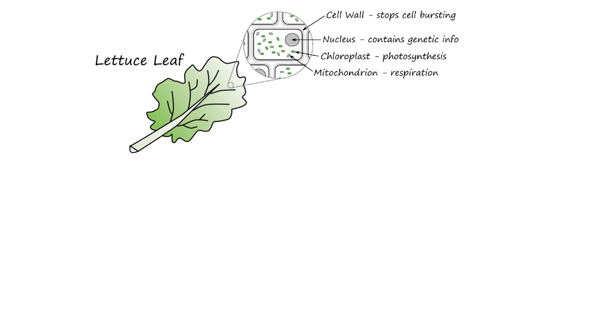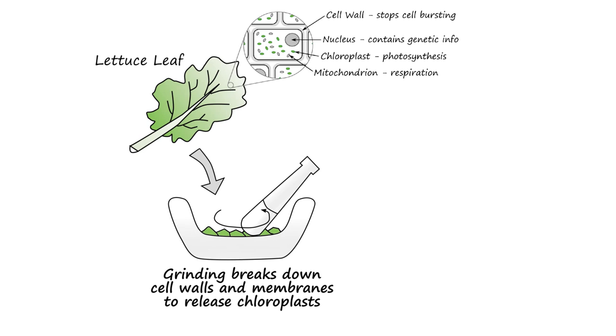First of all, we'll start with a leaf and grind it up in a pestle and mortar in a 1.5% sucrose buffer. Grinding the material will break down the cell wall and the cell membrane and release the chloroplasts. The sucrose buffer is isotonic to the chloroplasts, meaning it has the same osmotic potential, so there'll be no net movement of water in or out of the chloroplasts and they'll stay intact.